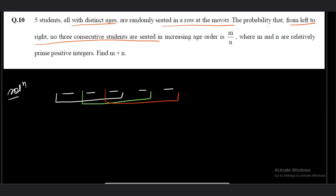We want the probability that from left to right, no 3 consecutive students are seated in increasing age order. So we consider 3 cases: the first 3 seats, or the middle 3 seats, or the last 3 seats.